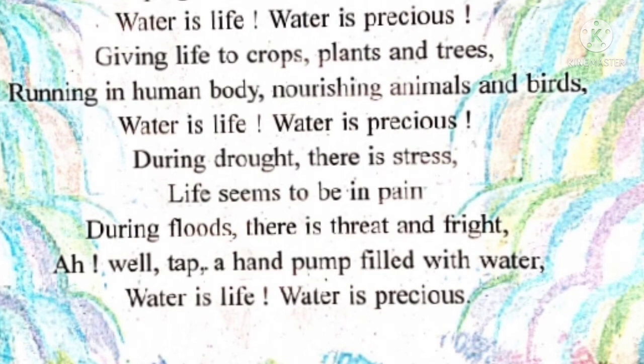Well, tap, a hand pump — filled with water. Well means kuan. Aap sab ne kuan dekha hai na — hum village mein isko dekhte hain. Pahle ke zamaane mein log paani ke liye well use karte the. You all know about tap — abhi hum sab ke ghar mein tap hai. And hand pump — pahle ke zamaane mein log paani ke liye hand pump use karte the. During floods, well, tap, and hand pump — all are filled with water. Water is life. Water is precious. Jal hi jeevan hai, jal amulya hai.